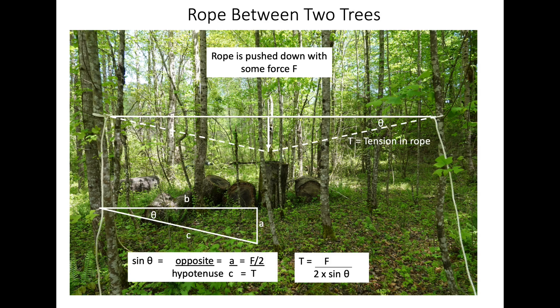Now a is going to be the force we push down here divided by two. Since it's suspended on both sides, that'll be half of that force that I pushed down with. And when we rearrange that, we get the tension here in this rope is going to be equal to the force divided by 2 times the sine of theta. Or basically half of the force divided by the sine of theta.